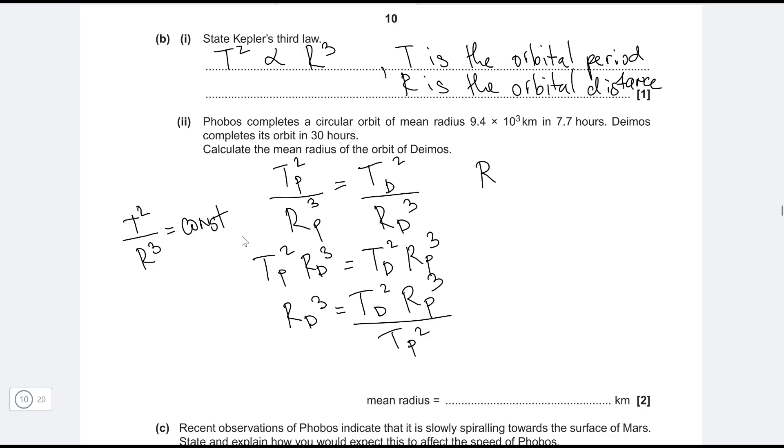Now let's cube root this, and we're going to get that the orbital distance of Deimos will be equal to the cubed root of the following expression.